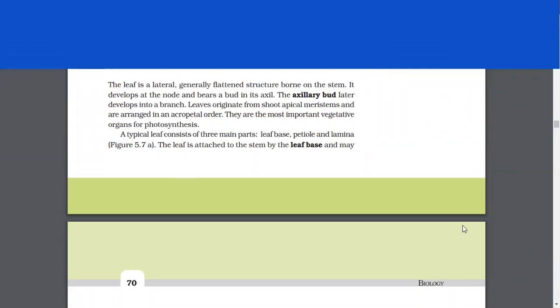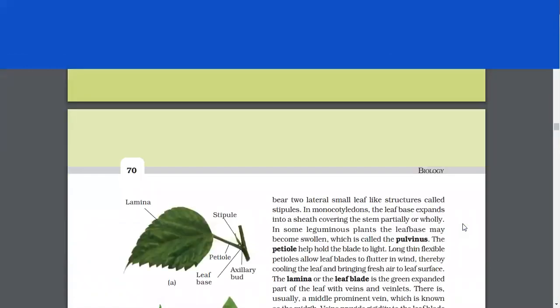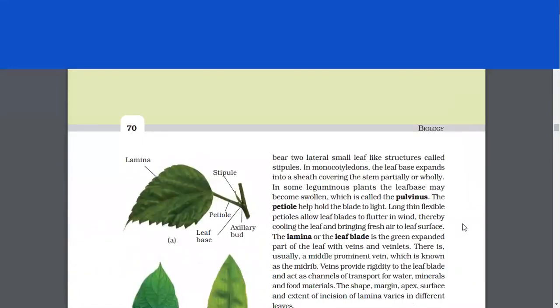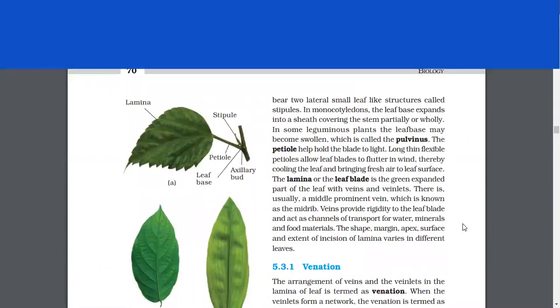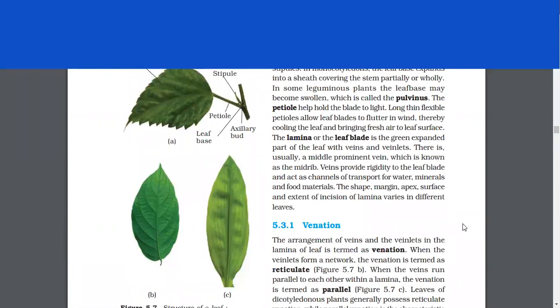A typical leaf consists of three main parts, leaf base, petiole, and lamina. The leaf is attached to the stem by the leaf base and may bear two lateral small leaf-like structures called stipules. In monocotyledons, the leaf base expands into a sheath covering the stem partially or wholly. In some leguminous plants, the leaf base may become swollen, which is known as pulvinus. The petiole helps hold the blade to light. Long, thin, flexible petioles allow leaf blades to flutter in wind, thereby cooling the leaf and bringing fresh air to the leaf surface. The lamina, or the leaf blade, is the green, expanded part of the leaf with veins and veinlets.